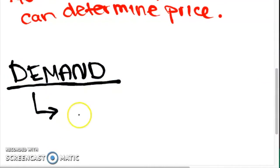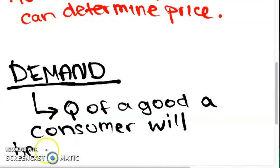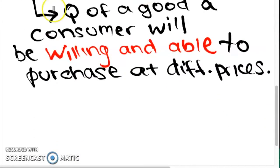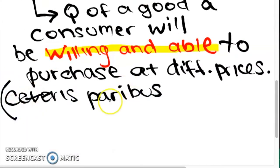Demand is the quantity of a good or service a consumer is willing and able to purchase at different possible prices during a particular time period, ceteris paribus. As we said in our previous video, ceteris paribus is all things remaining equal.